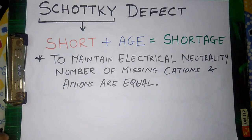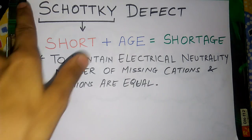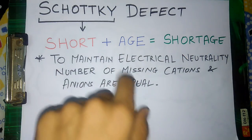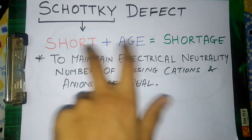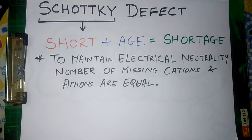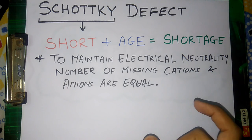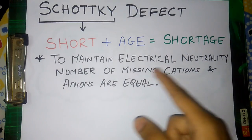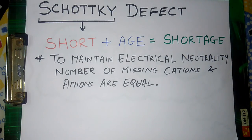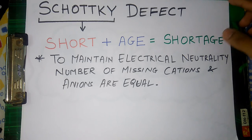See, here I have written 'Shorts.' Schottky defect is sometimes pronounced as 'Shotky' by some people, and I think that's an advantage for them, because they get to know a word called 'Shot.' And if we add 'age' to the word 'Shot,' what do we get? We get 'Shortage.' So we get to know that there is going to be a shortage of atoms in the solid. And since the solid is ionic, there will be a shortage of ions. To maintain electrical neutrality, the number of missing cations and anions are equal. So an equal number of cations and anions are missing from the solid — and that is what happens in the Schottky defect.